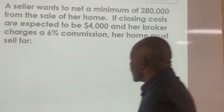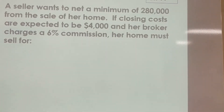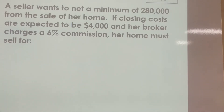This question is, in essence, figure out how much a property should be sold for, given certain known facts. We're going to start with a question. It says a seller wants to net a minimum of $280,000 from the sale of her house. If closing costs are expected to be $4,000 and her broker charges 6% commission, her home must sell for how much?